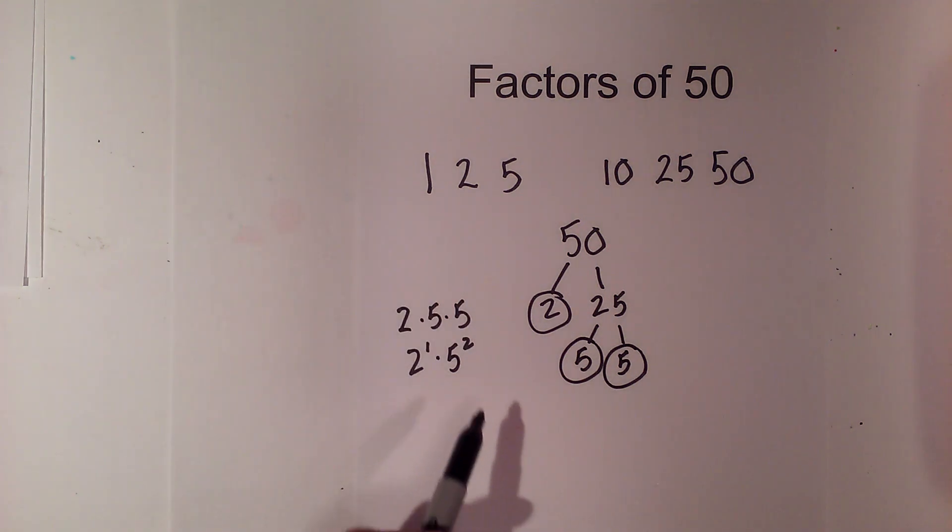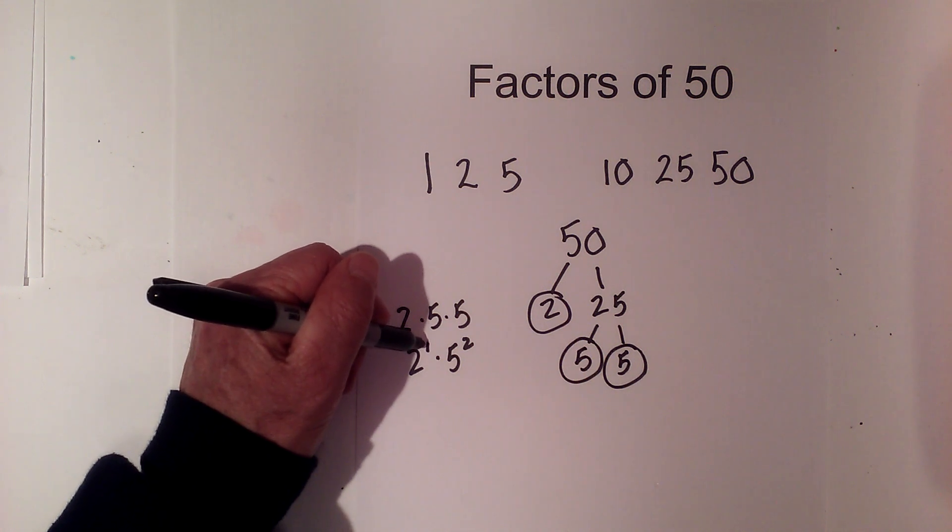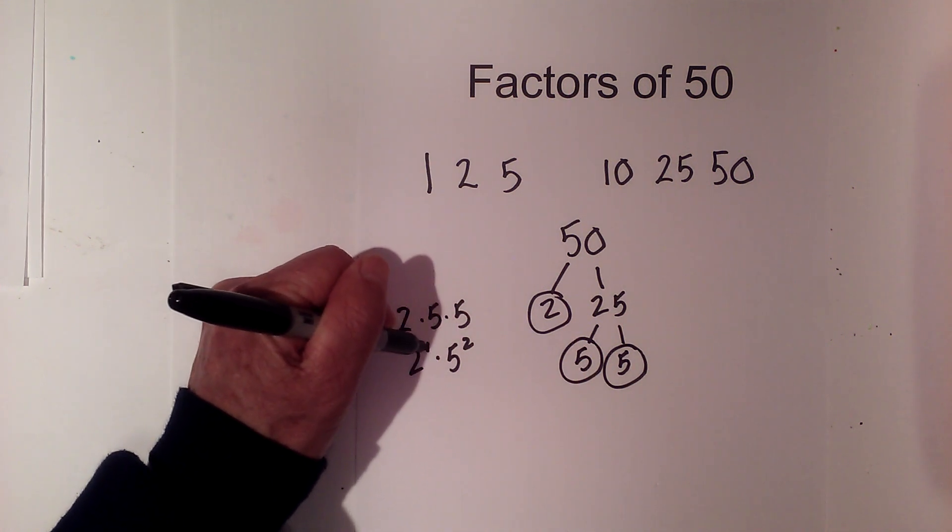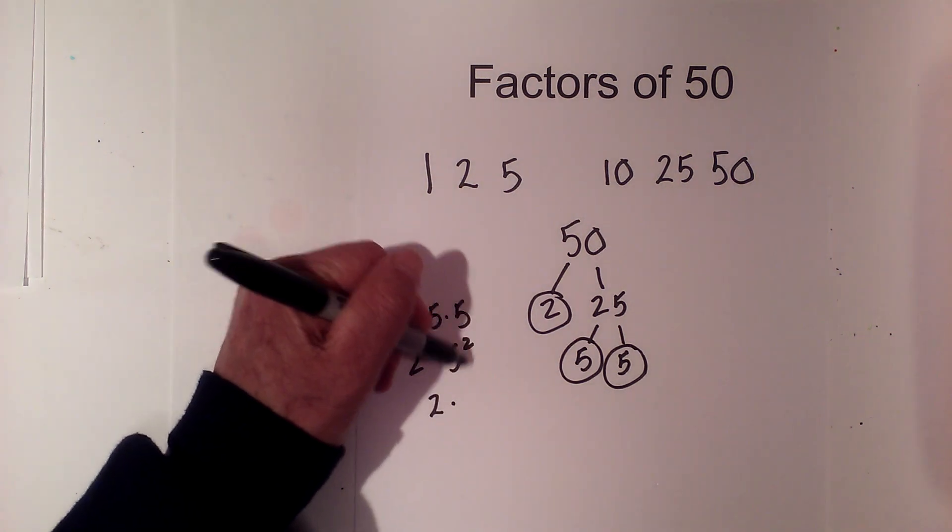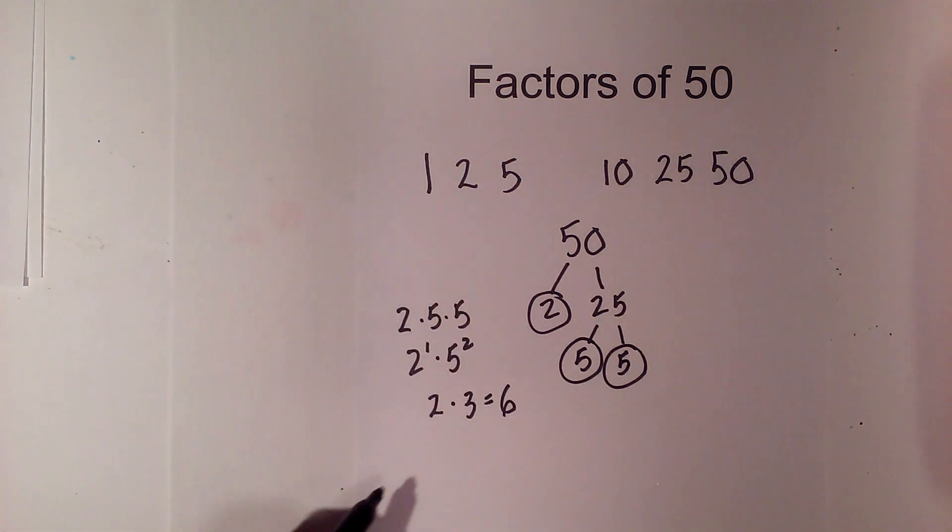Now here's a little trick. If you want to know if you have all the factors, take the exponents of the prime numbers and add 1. So 1 plus 1 is 2, times 2 plus 1 is 3. Multiply those together, that equals 6.